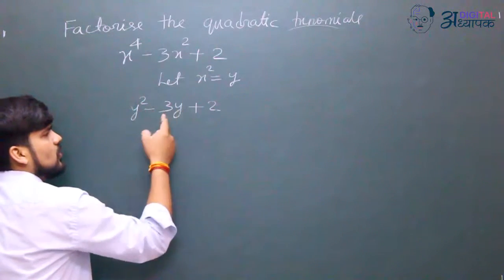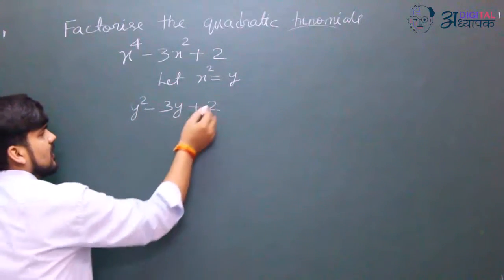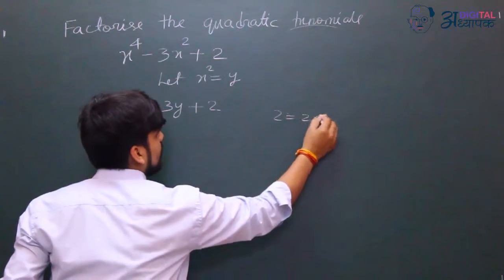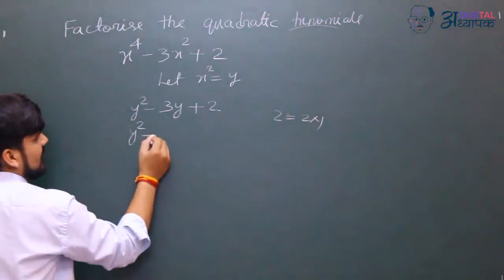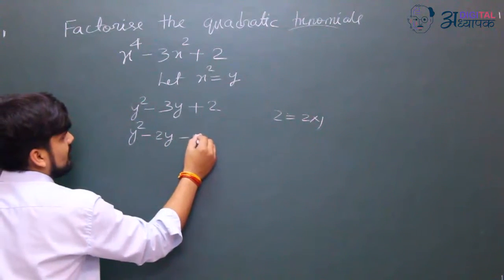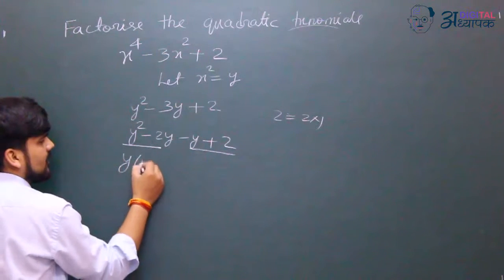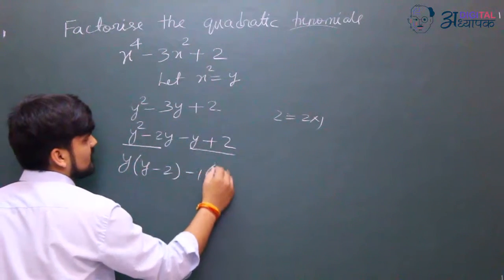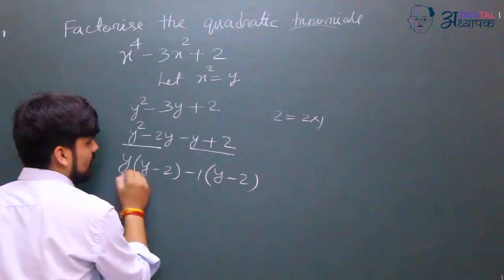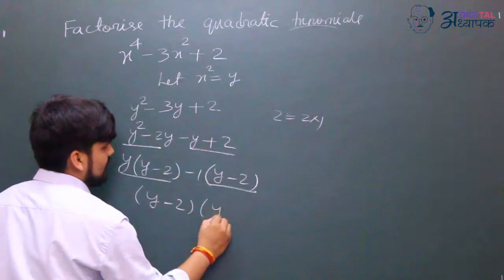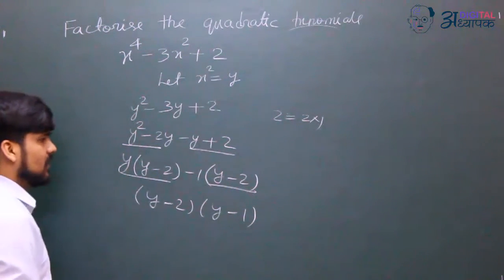Then we get y^2 - 3y + 2. Here we can factor out common terms. We can write (y - 2) as a common factor, and (y - 1), giving us (y - 2)(y - 1).